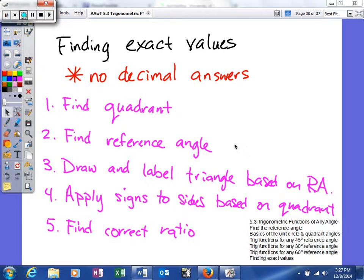We need to figure out what quadrant our angle's going to terminate in. We need to find the reference angle, and then we need to draw and label the triangle based on our reference angle.